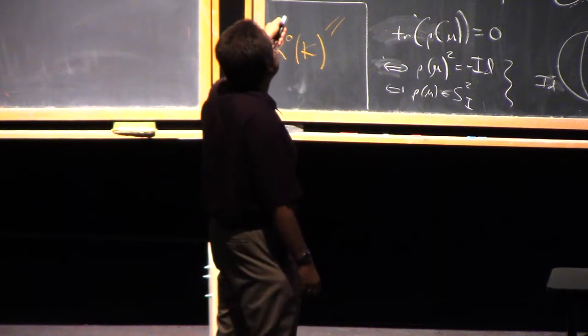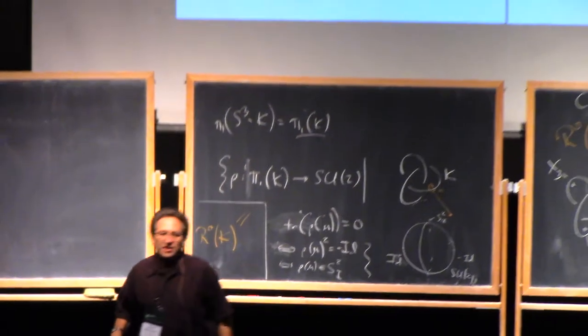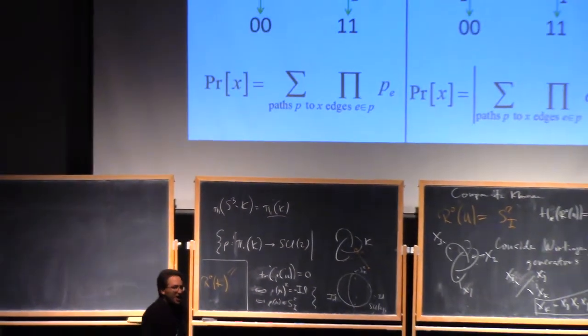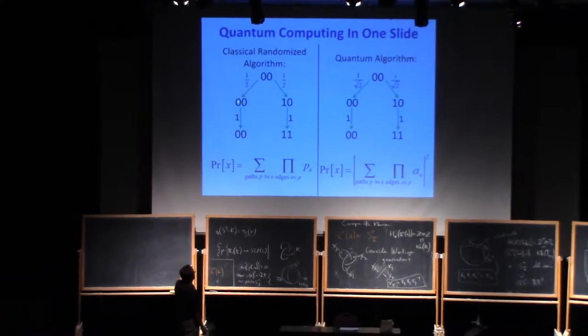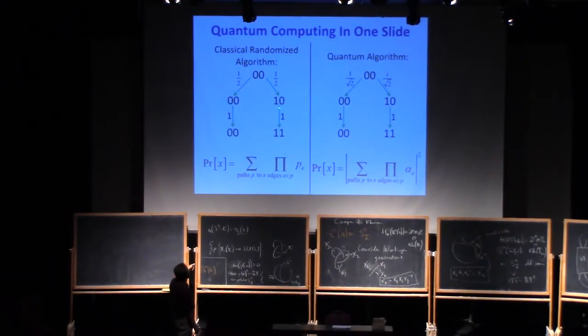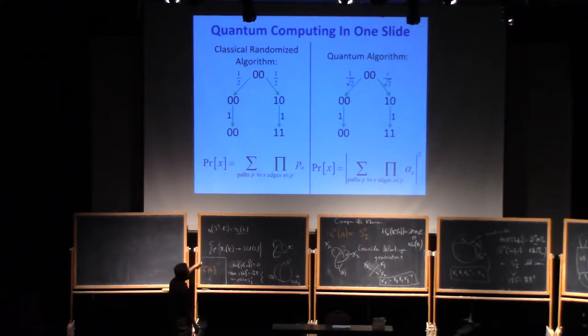So we start in some simple initial state, like the all zero state, and then we can do operations like flip the first bit by the outcome of a fair coin flip, which would move my state to a convex combination of the zero, zero and the one, zero state. Then I could set the second bit equal to the first bit, which will do this evolution.